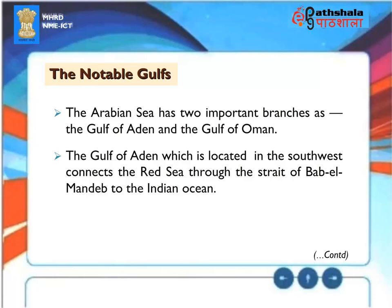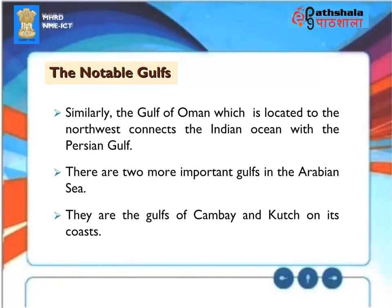The Notable Gulfs. The Arabian Sea has two important branches: the Gulf of Aden, located in the southwest, which connects the Red Sea through the Strait of Bab-el-Mandeb to the Indian Ocean; and the Gulf of Oman, located to the northwest, which connects the Indian Ocean with the Persian Gulf. Two more important gulfs in the Arabian Sea are the gulfs of Cambay and Kutch on its coasts.